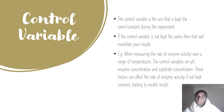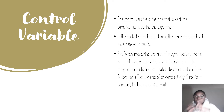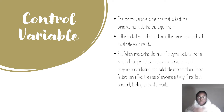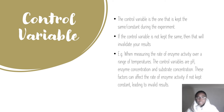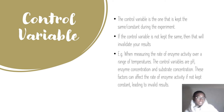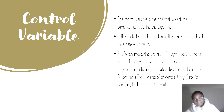The control variable is the one that is kept the same — constant — during the experiment. If the control variable is not kept the same, it will invalidate your results because these variables can affect your results. Using the example of measuring the rate of enzyme activity over a range of temperatures, the control variables are pH, enzyme concentration, and substrate concentration. These factors can affect the rate of enzyme activity if not kept constant, leading to invalid results.